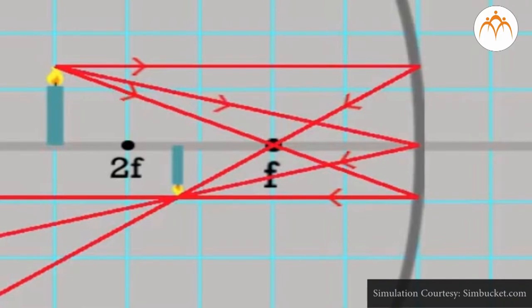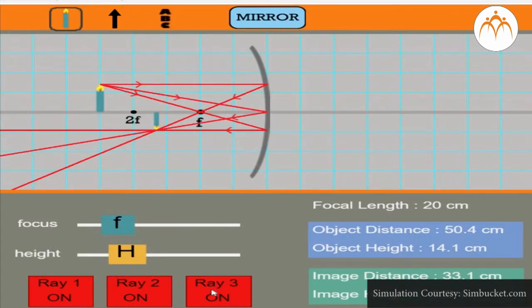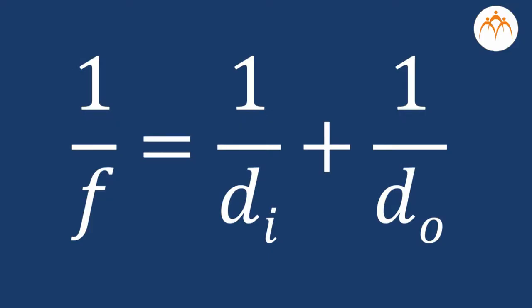The mirror equation expresses the quantitative relationship between object distance dO, the image distance dI, and the focal length f. The equation is stated as follows: 1 upon f is equal to 1 upon dI plus 1 upon dO.